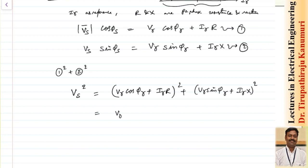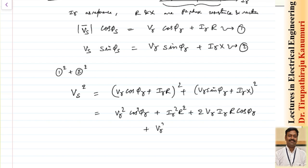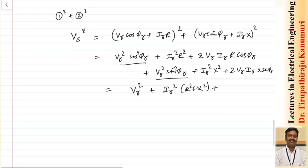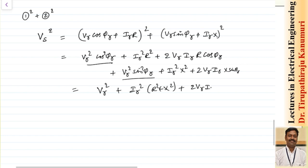Expanding this: Vs² = Vr²·cos²(phi_r) + Ir²·R² + 2·Vr·Ir·R·cos(phi_r) + Vr²·sin²(phi_r) + Ir²·X² + 2·Vr·Ir·X·sin(phi_r). Combining terms: Vs² = Vr² + Ir²·(R² + X²) + 2·Vr·Ir·R·cos(phi_r) + 2·Vr·Ir·X·sin(phi_r).